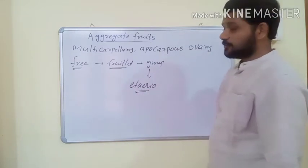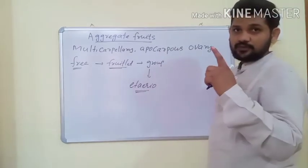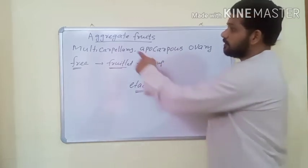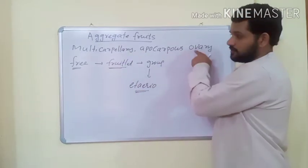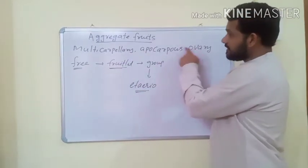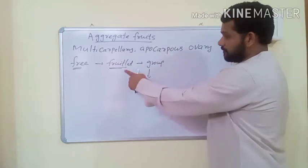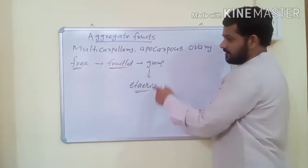In aggregate fruits, one flower develops into one fruit, but that fruit develops from a multicarpellary apocarpous ovary. Each carpel develops into a fruitlet, and a bunch of fruitlets is known as an etaerio.